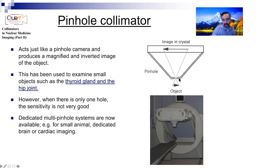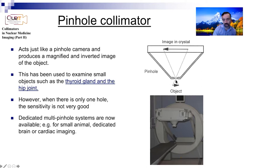With pinhole collimators, you would use a single pinhole collimator. This was used to examine small objects like the thyroid gland and the hip joint. But when there was only one hole, sensitivity was not very good - very limited, with a very limited number of photons going exactly in this direction to be detected.